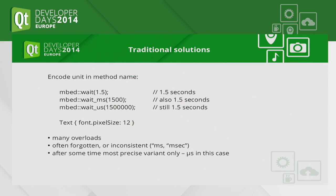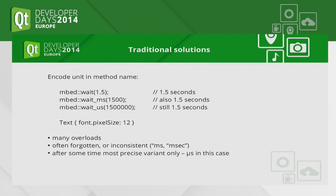So, how is that problem solved usually? Something that's very common is you just encode the unit in your method name. When you start with the API, you still are enthusiastic and really do it for each method. After a while, you may be reduced to the most precise resolution and only offer the nanoseconds thing, which is ugly to use - I don't really want to write 15 million just to wait for one and a half seconds. It's ugly.